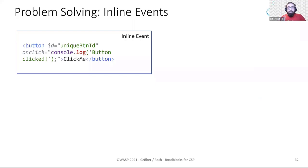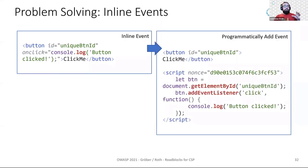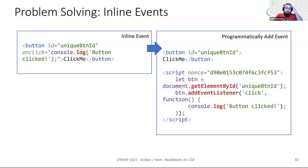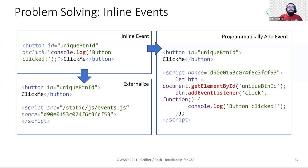Let's look at the most common solution for inline events. We have to add the event to the element programmatically — creating a script that gets a handle to the target element, for example via getElementById, and then programmatically attaches the event using the addEventListener API. This code snippet then needs to be allowed in the CSP, for example via a nonce. Again, the better option is to do this programmatic addition not in an inline script but in a nonced external script.